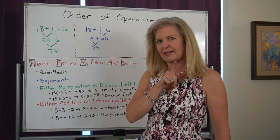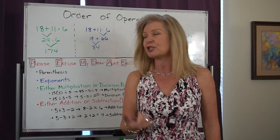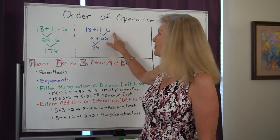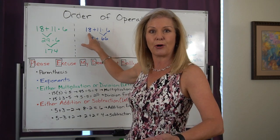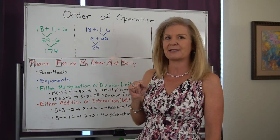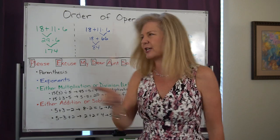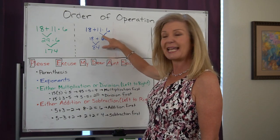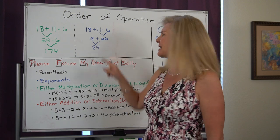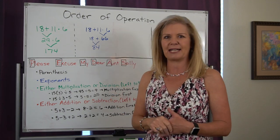The second mathematician, though, changed the order that he or she was solving the problem. We took the same problem, 18 plus 11 times 6, but this mathematician decided to do the multiplication first. 11 times 6 is 66. 66 plus 18 is 84.